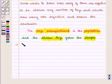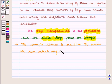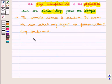Also we note that the sample chosen is random. It means we can select any object or person without any preferences, and this is called choosing the sample randomly.